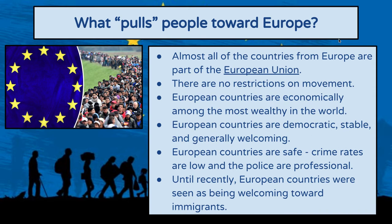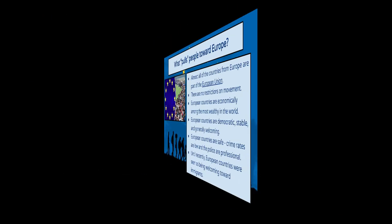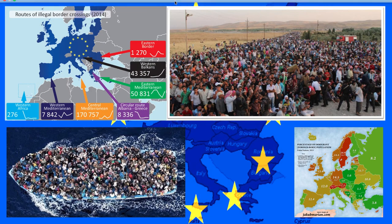Now let's look at some pictures of European immigration. This graphic in the upper left is really nice because it shows you where immigration into Europe is coming from. Whenever you see that flag with the stars, that is the flag of the European Union — those are all the European Union countries, although Britain is leaving the European Union; that's an entirely different story we won't get into here.